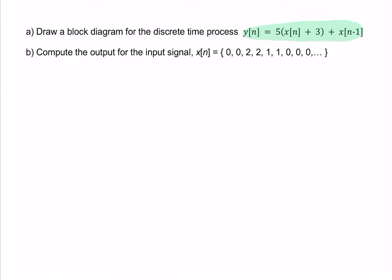Here, we're given a difference equation and we're asked for a block diagram. So the difference equation tells us what happens to x. In this case, x has 3 added to it, it's multiplied by 5, and then we add a delayed version of x.